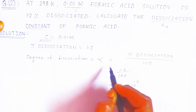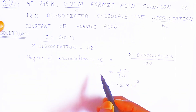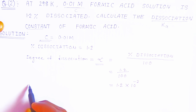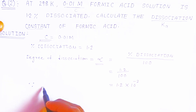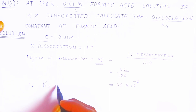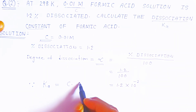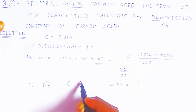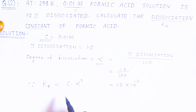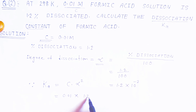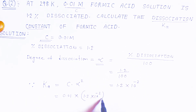Now we know the concentration and the degree of dissociation alpha, and we know the formula relating these three quantities. The dissociation constant of formic acid is: Ka = C × α². We substitute: concentration is 0.01, and alpha is 1.2 × 10⁻², so alpha squared is (1.2 × 10⁻²)².